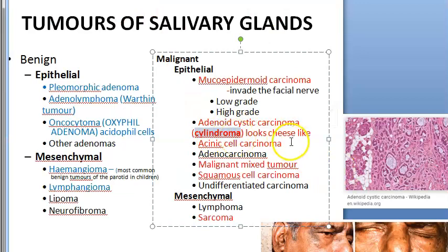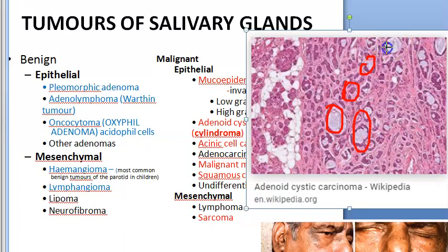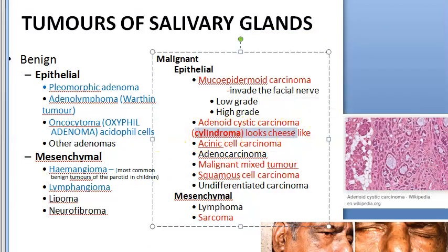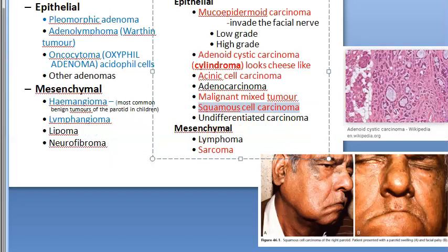Cylindroma is the old name for adenoid cystic carcinoma. Histologically it looks like Swiss cheese — holes throughout — that is what the cheese appearance refers to. In this tumor there can be facial nerve paralysis; it can metastasize to lymph nodes, lung, brain, and bone. Treatment is radical parotidectomy. Other malignant types include acinic cell carcinoma, adenocarcinoma, and malignant mixed tumor.